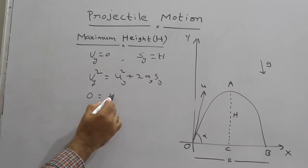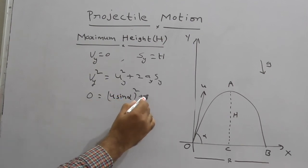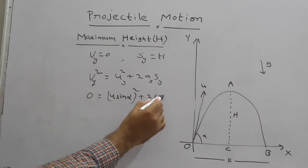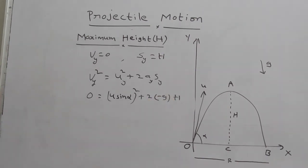Earlier we discussed Uy value as u sin α. Here it is u sin α whole square plus 2ay. What is ay? Minus g. And sy is nothing but capital H. Therefore here you can write 2gH = u² sin² α. Using this, what is H? u² sin² α by 2g.